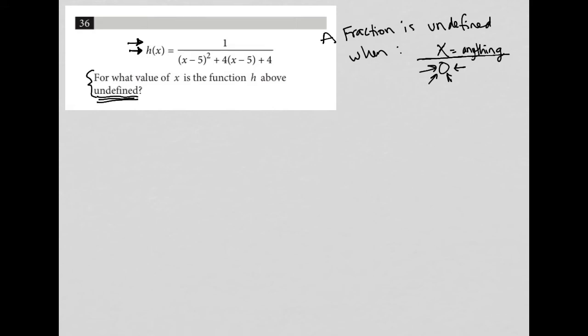So if I want h of x to be undefined, that means I actually want the denominator to equal zero. So that's what I'm going to do. I'm going to set this denominator equal to zero because the x value that makes that denominator equal to zero is the x value that makes the entire function undefined.